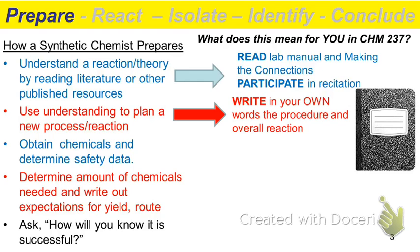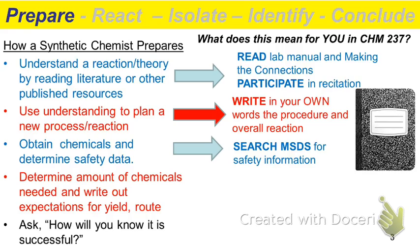Ideally, you would also include an overall reaction. A synthetic chemist would then obtain whatever chemicals were necessary and get the safety information — all suppliers are required to ship safety information with chemicals. Since you aren't purchasing your chemicals, you'll need to search for those MSDS sheets, get that information, and summarize it so that in case of an emergency you'd be prepared and know how to clean up spills.